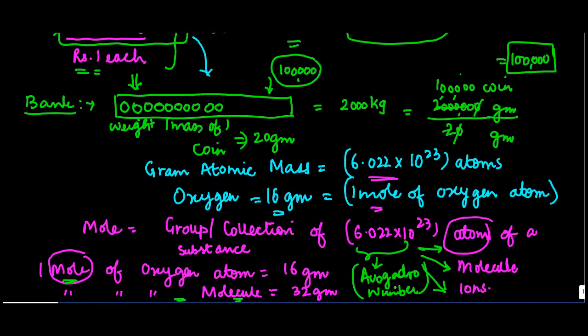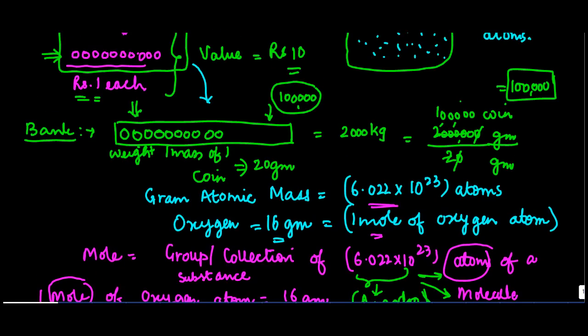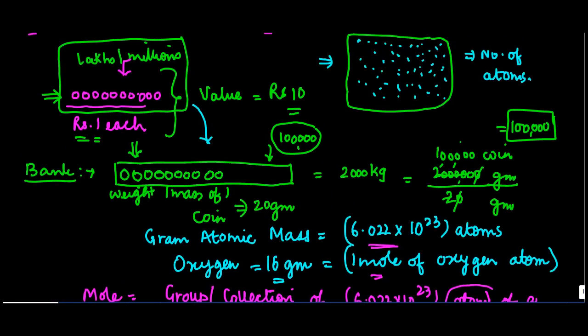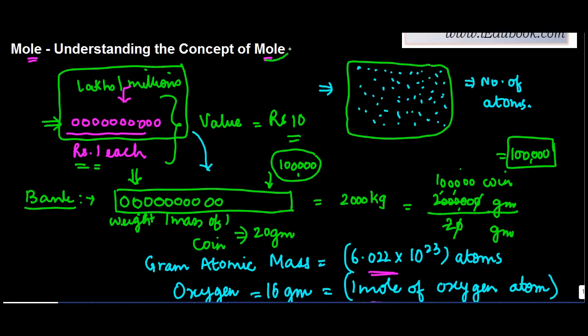I hope you had a good time understanding this. In case there are any clarifications, you can just write it down. To recapitulate, mole is nothing but just a kind of collection, a collection of a defined number of atoms or molecules, and it basically tries to link the mass of an atom or a molecule with the number of atoms.